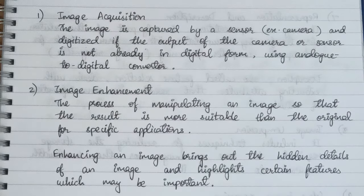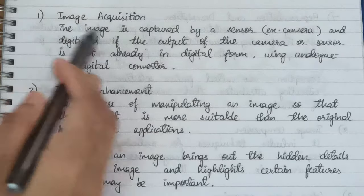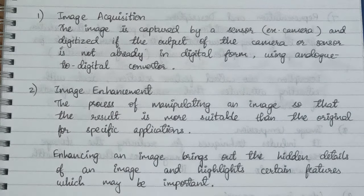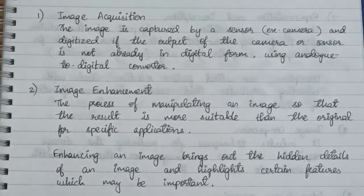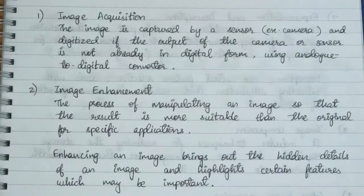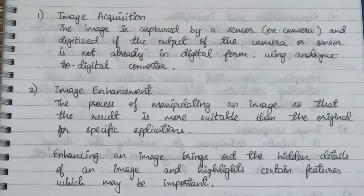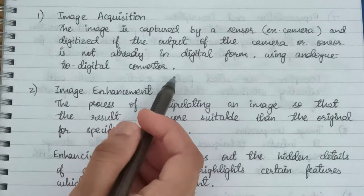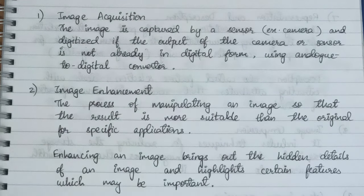The first step is image acquisition. Image acquisition mainly means acquiring the image. It can be done with the help of a camera, which is also known as a sensor. And if the image is not already digitized, then it can be done with the help of an analog to digital converter. So image acquisition mainly means acquiring or getting the image.